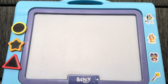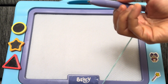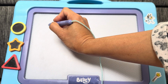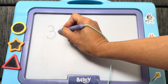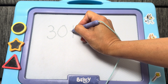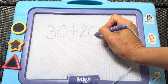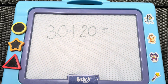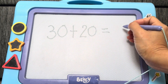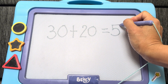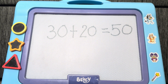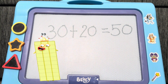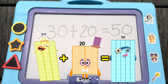Now, let's try another one. Let's start with 30 plus 20 is equals to... Can you tell me what is the right answer? If your answer is 50, then you are right! 30 plus 20 is equals to 50.